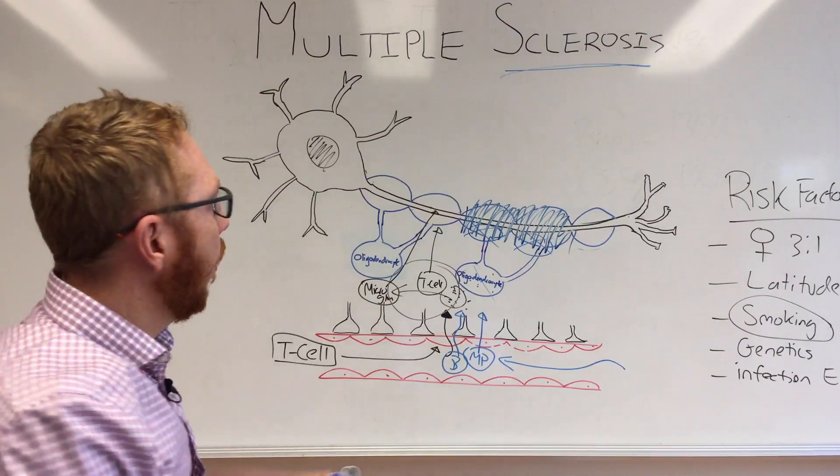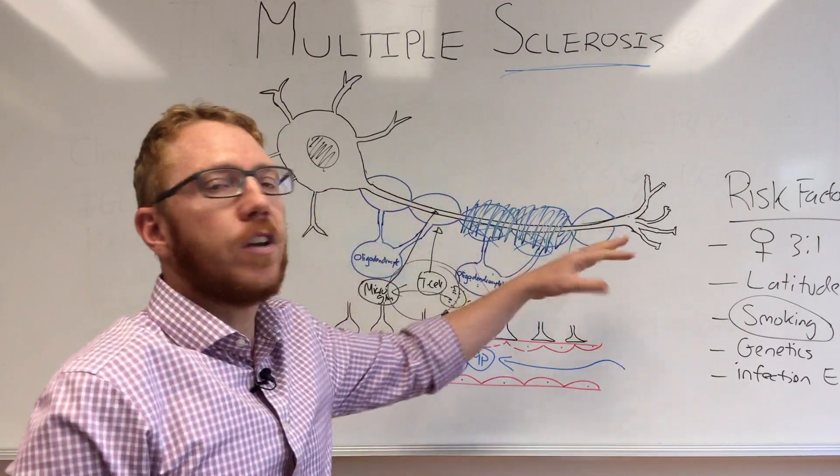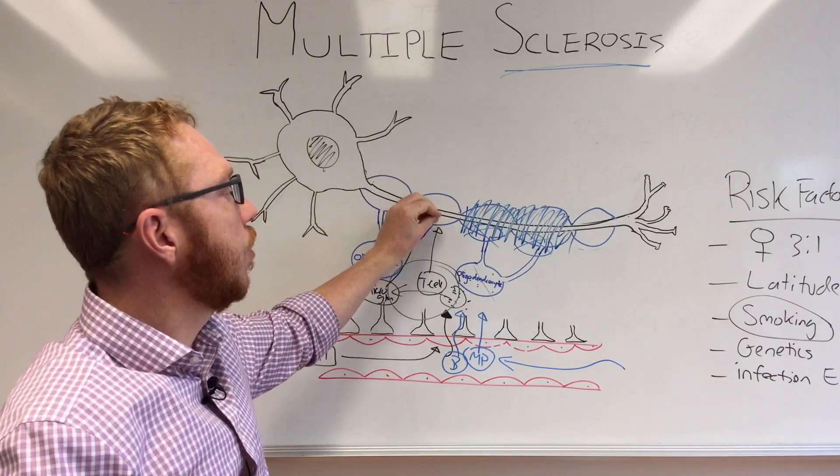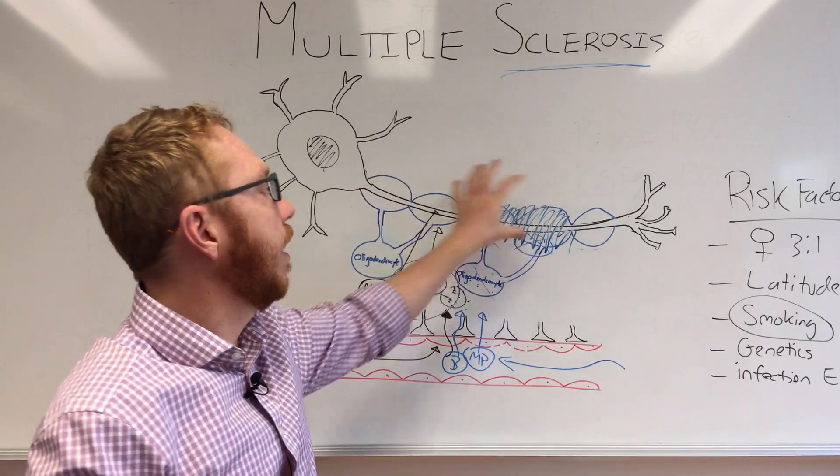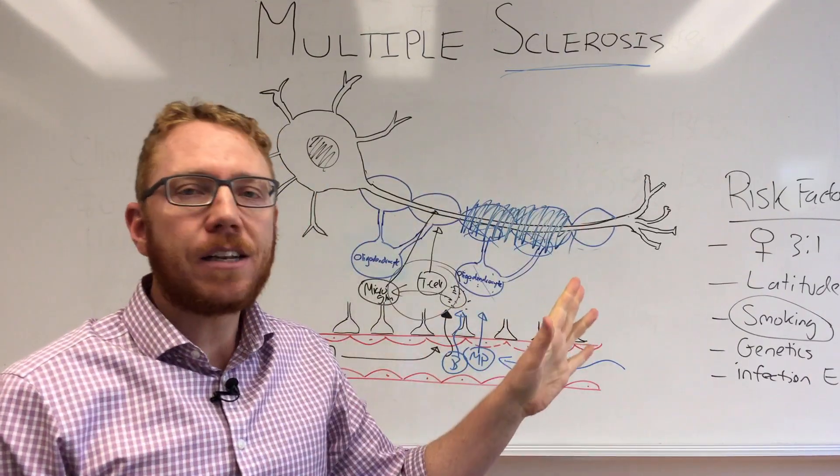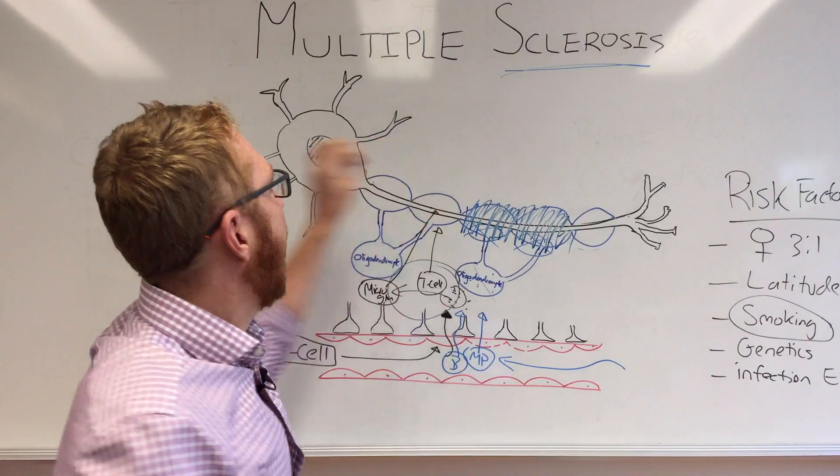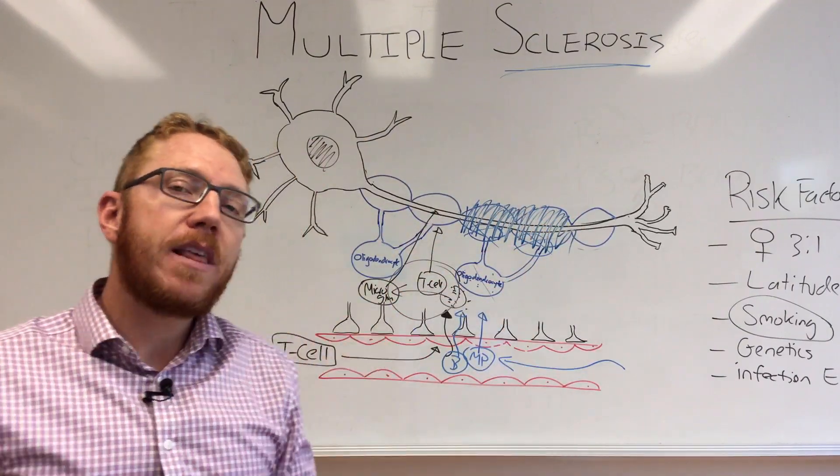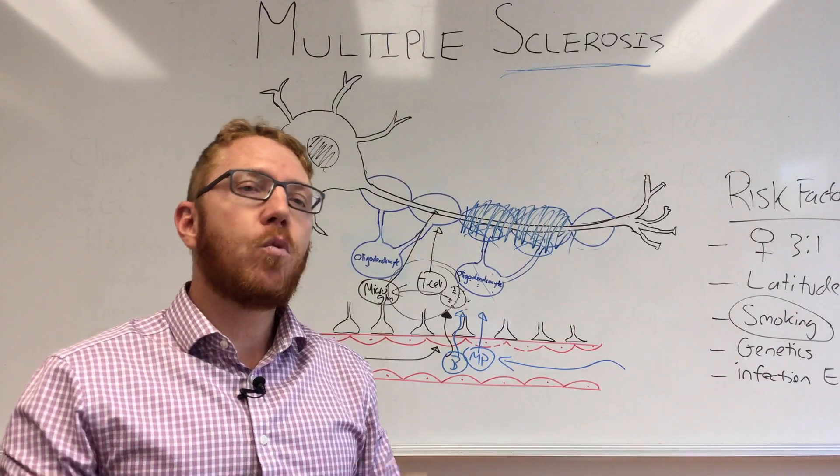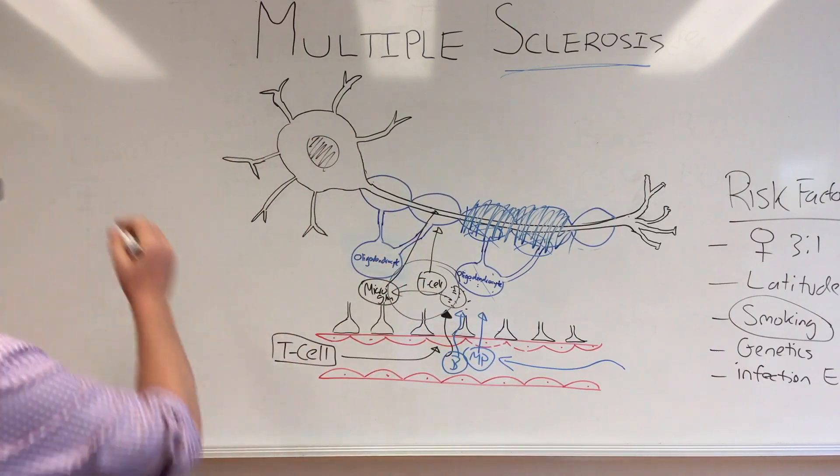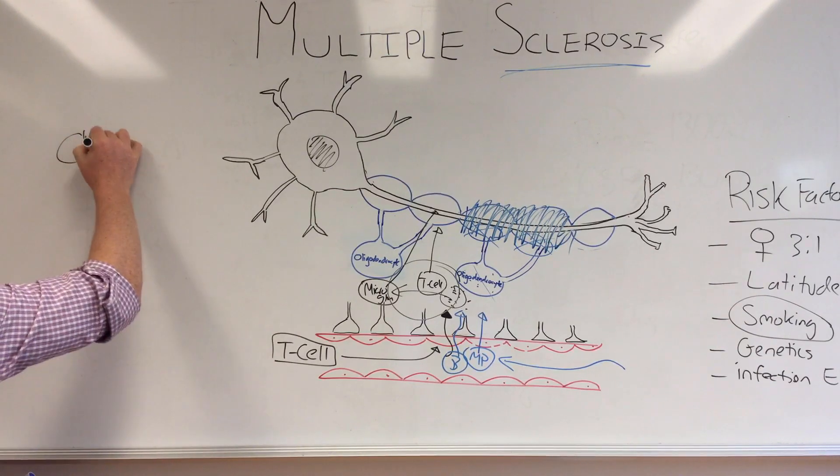When this starts to occur, the speed of action potential is going to be diminished to the point where if there is axonal damage and destruction with complete degradation of the myelin, that propagation potential is completely lost and that axon or that neuron ceases to function. Depending where that is in the body will determine what symptoms start to manifest. This leads us to the last part of this lecture which is clinical manifestations.